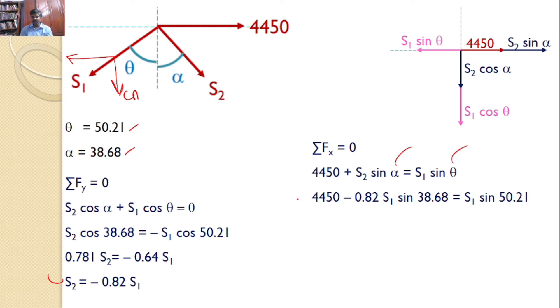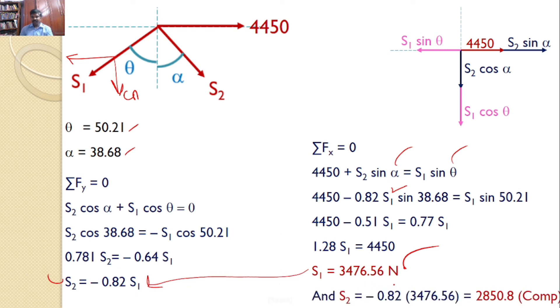You can simplify. This is only one equation and there is only one unknown that is S1. Upon simplification, you will get S1 is equal to 3476.56 newtons. And you just substitute S1 here. Then you can calculate S2. That is minus you are getting.